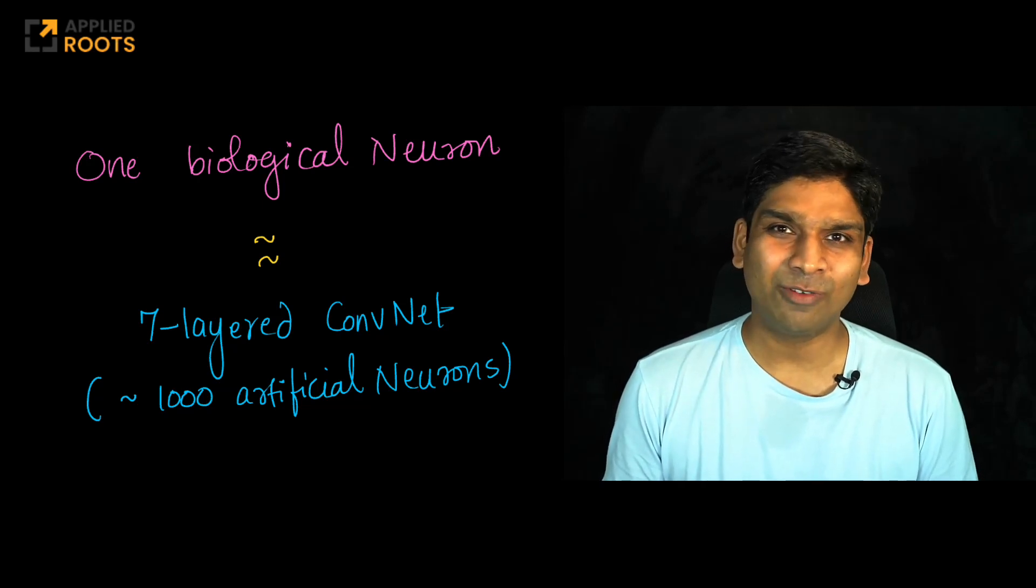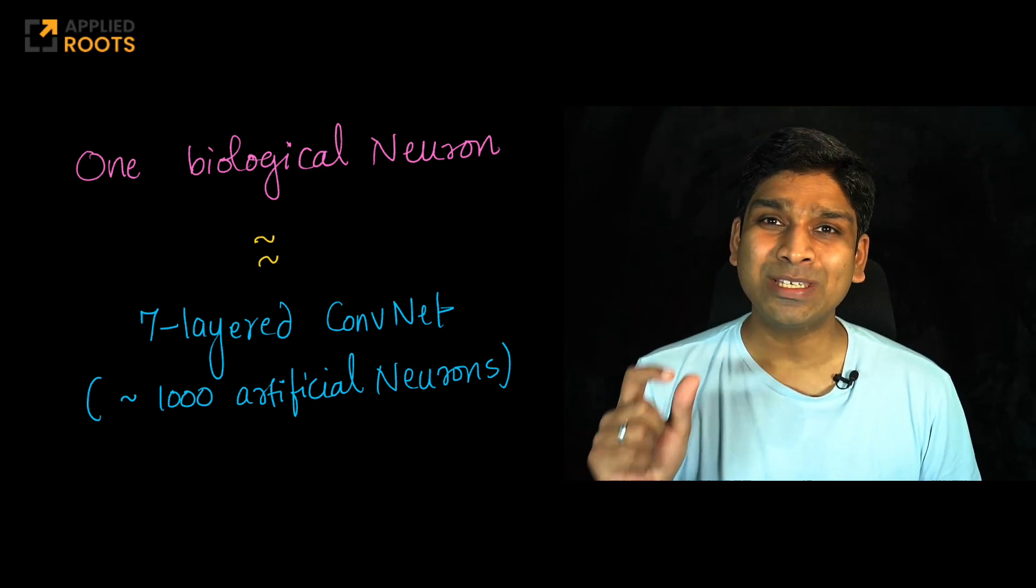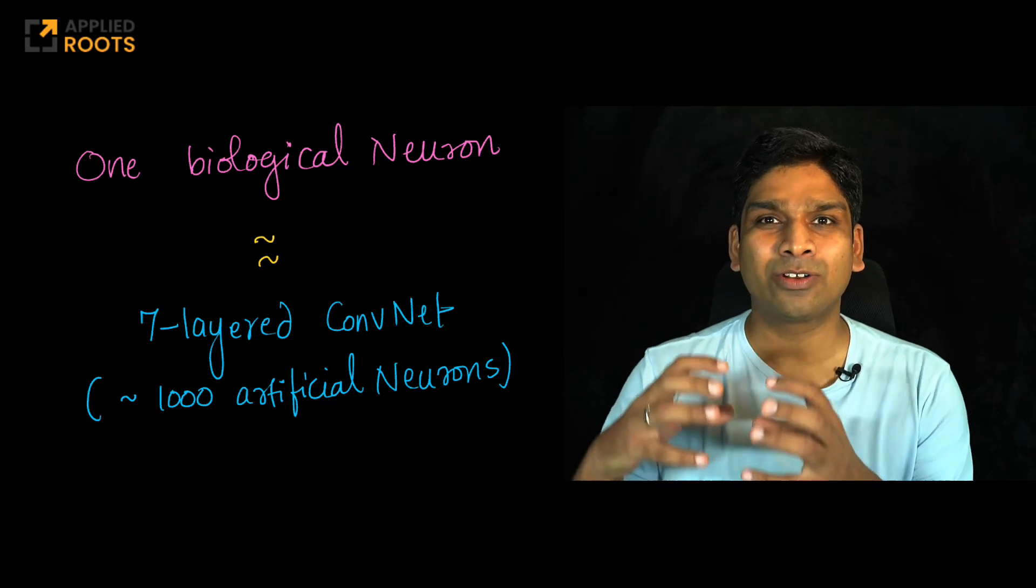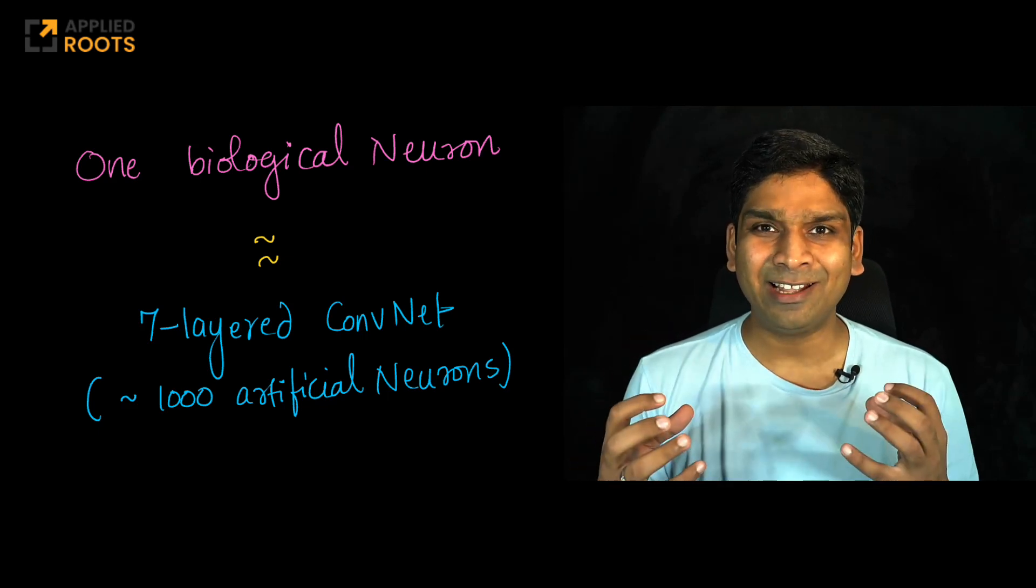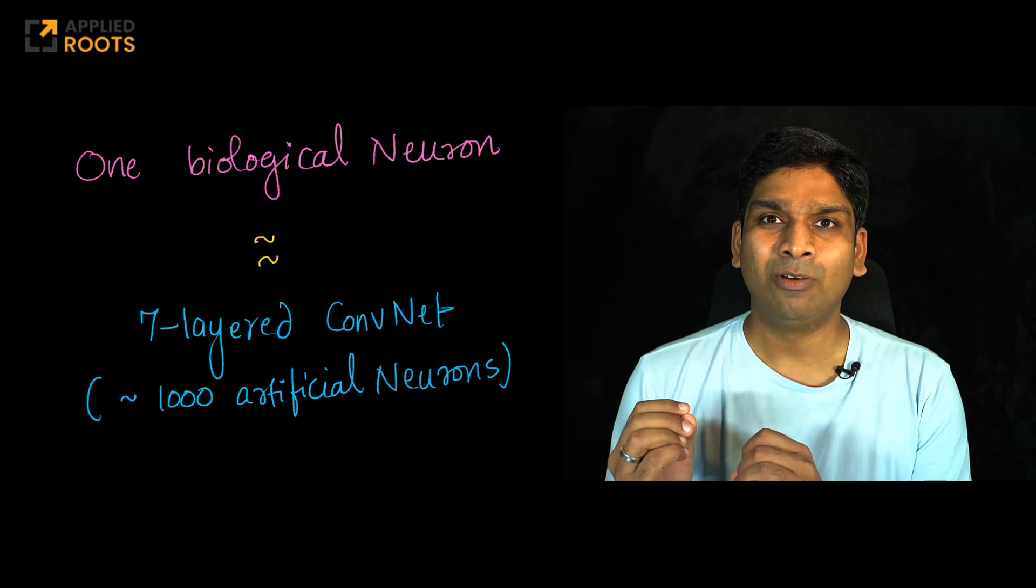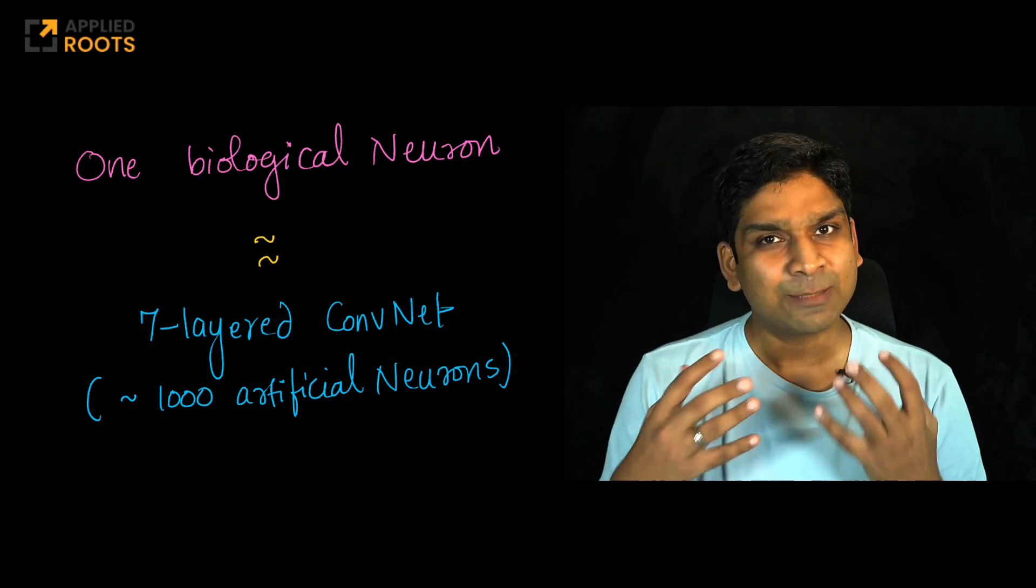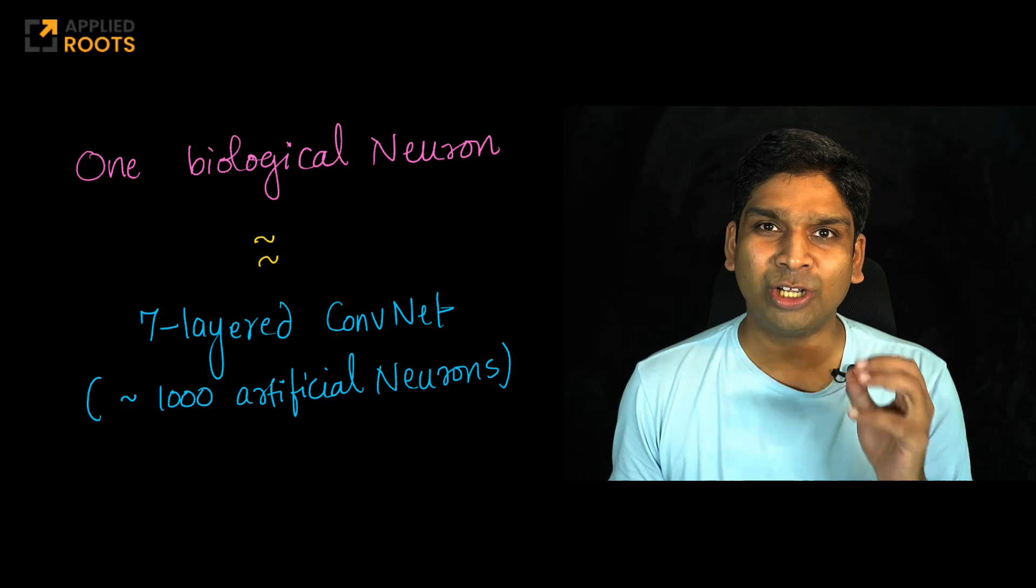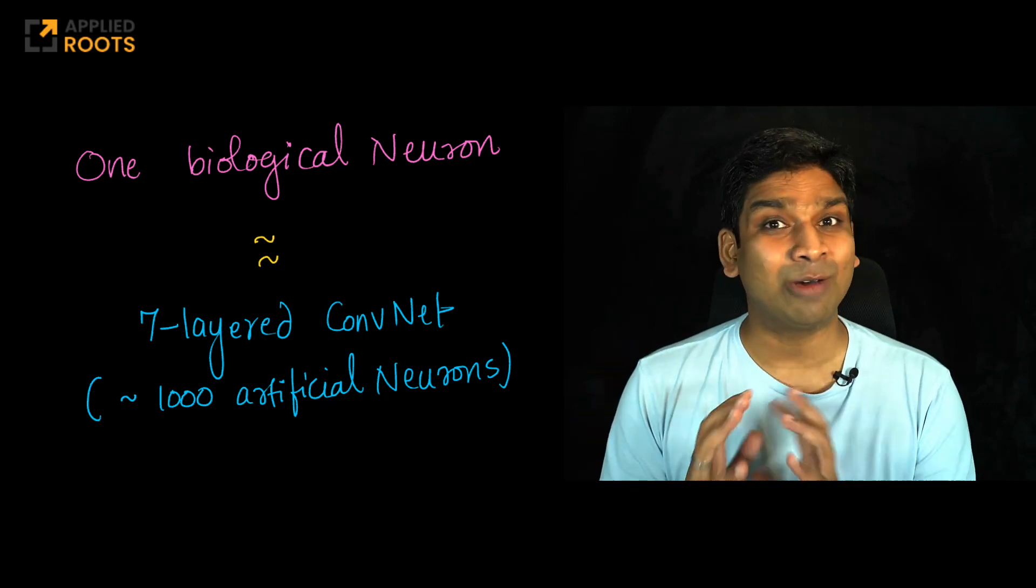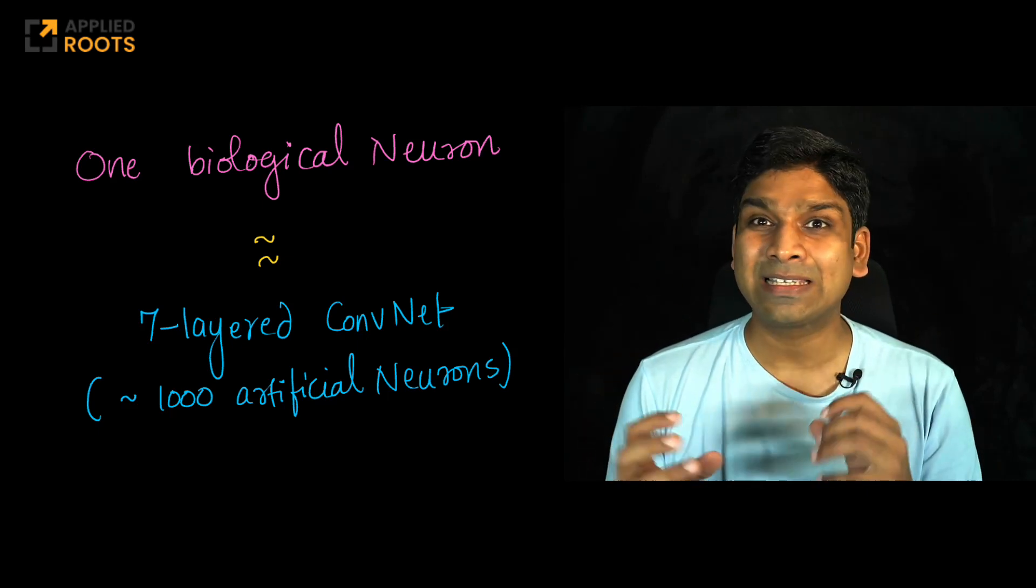Hi friends, in this video we will learn of a very interesting research paper that tried to simulate a biological cortical neuron using a deep neural network. This is a type of research that typically computational neurosciences or brain sciences or neurophysiology departments conduct.